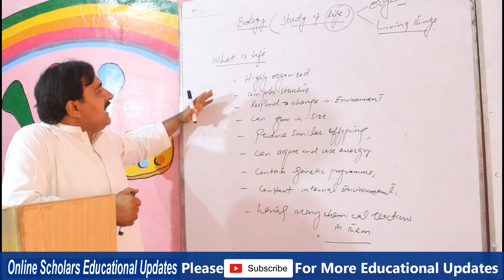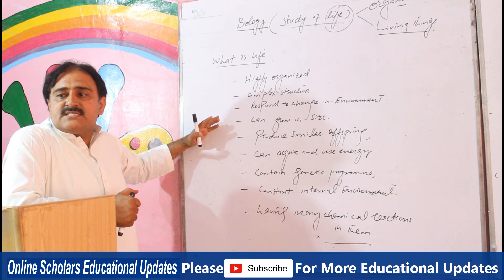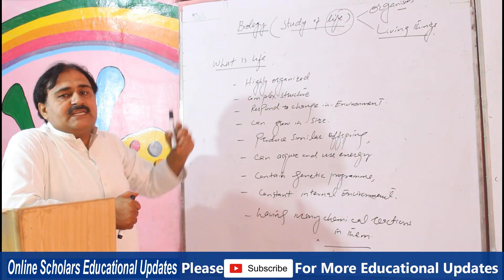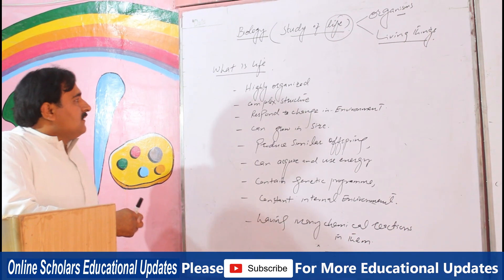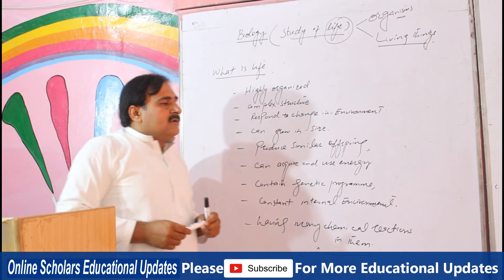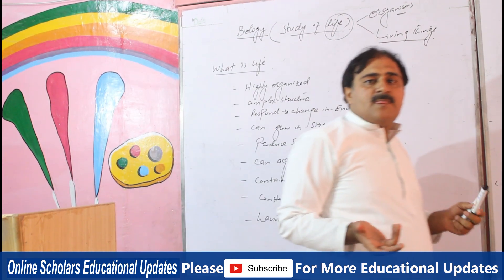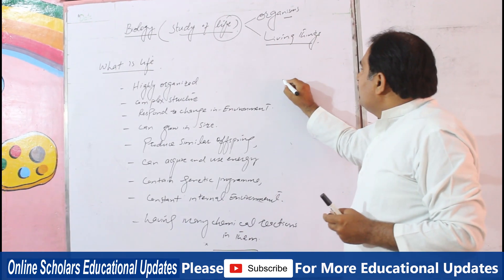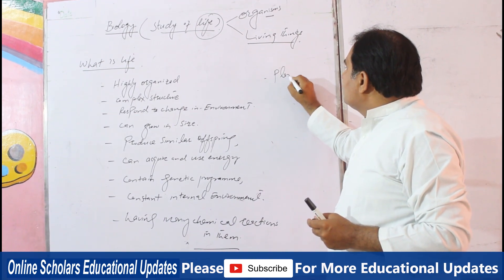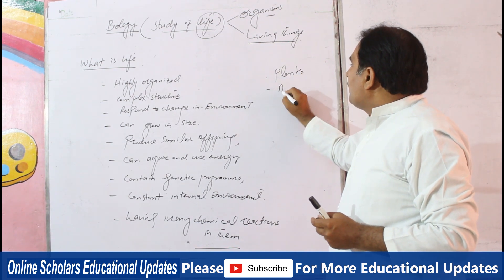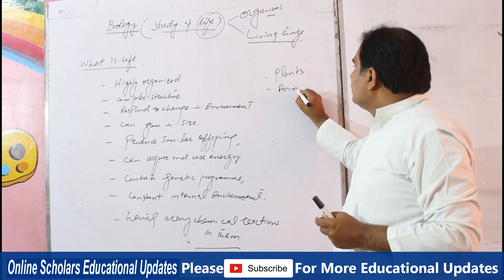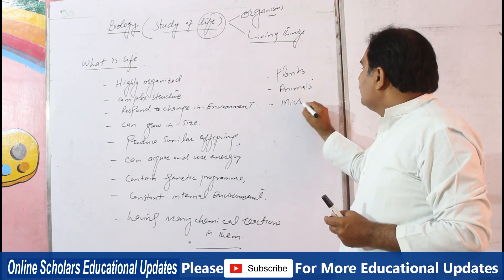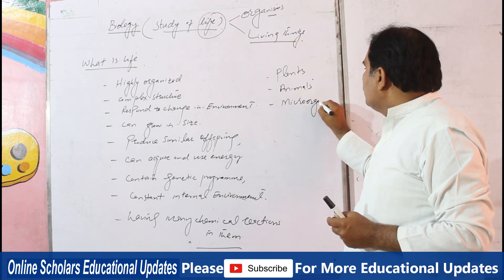All these characteristics indicate the characteristics of life. With the help of these characteristics, we can separate living things from non-living things. In our surroundings, living things are in the form of plants, in the form of animals, in the form of micro-organisms.